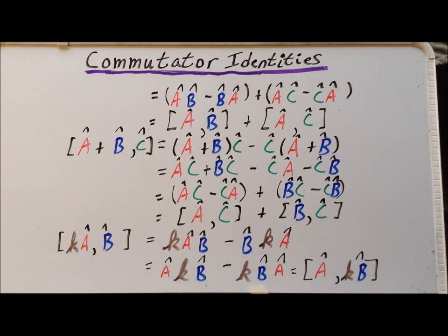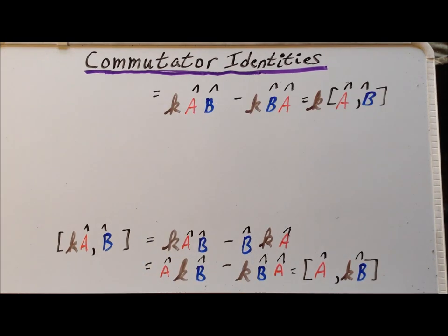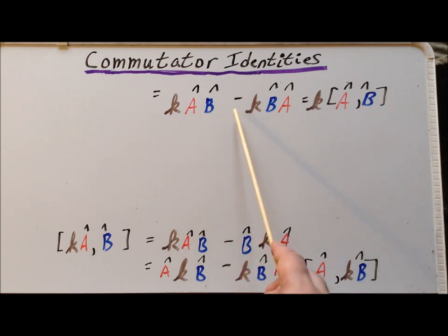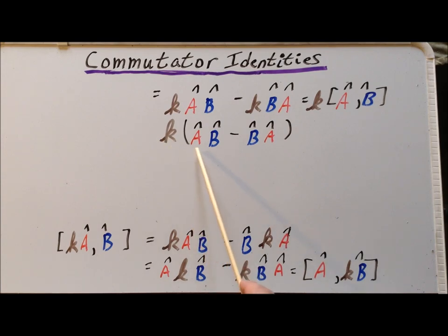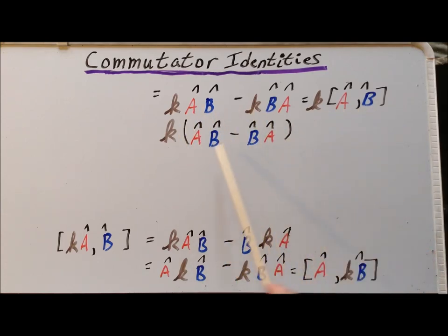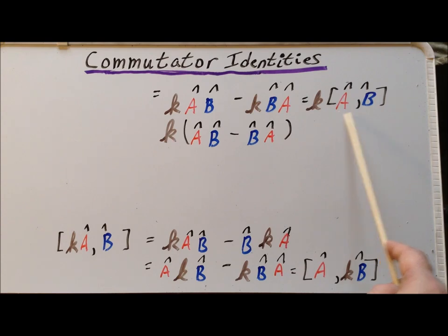Continuing with the same expression AKB minus KBA, we can pull the constant K in front to get K times (AB minus BA). We recognize AB minus BA as the commutator of A and B. So we see that [KA, B] = [A, KB] = K[A,B] — all three expressions are equal to K times the commutator of A and B.